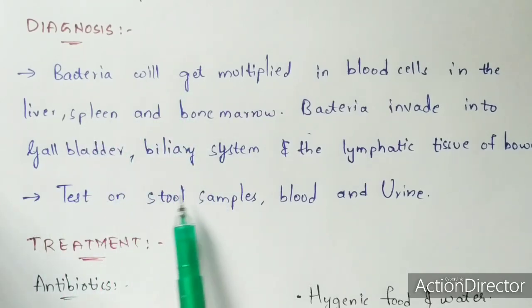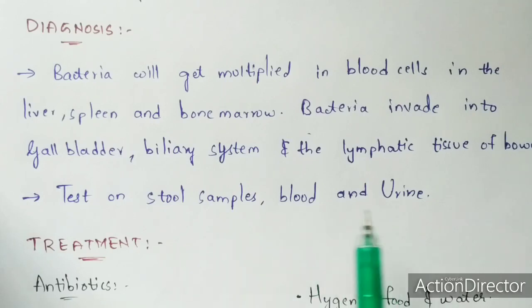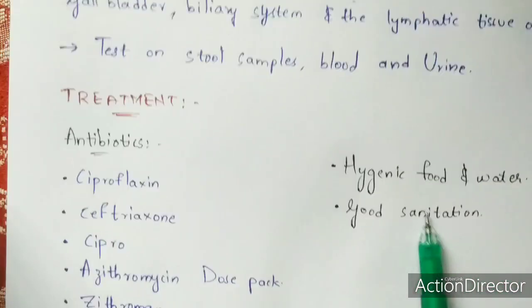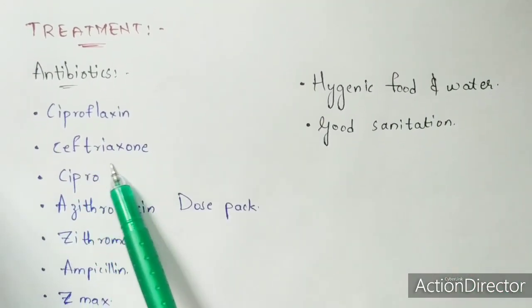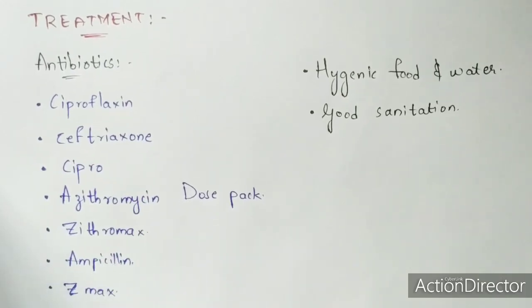For diagnosis, stool samples, blood, and urine are tested to check the amount of bacteria present. A low bacterial count indicates mild typhoid fever, while a high bacterial count indicates severe typhoid fever. For treatment, antibiotics are given, including ciprofloxacin, ceftriaxone, azithromycin (Zithromax), ampicillin, and Z-pack.